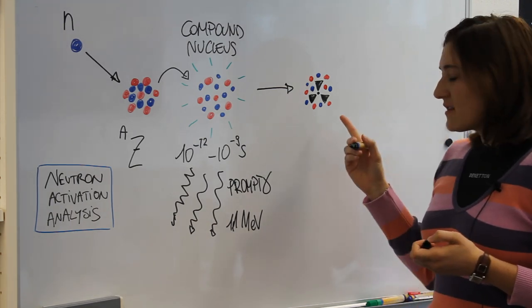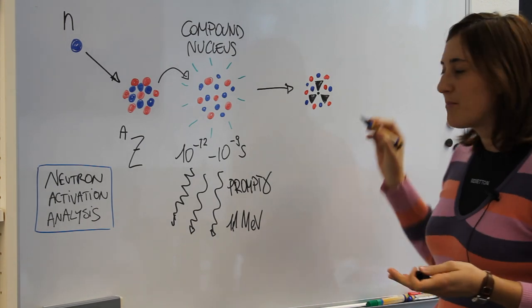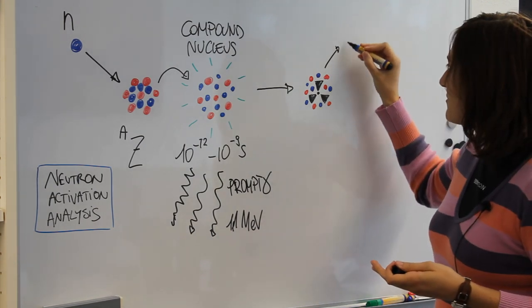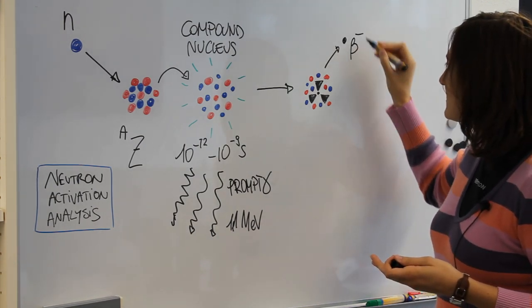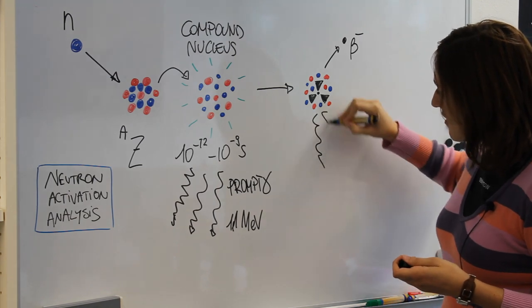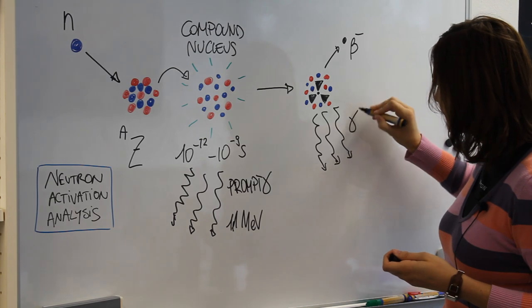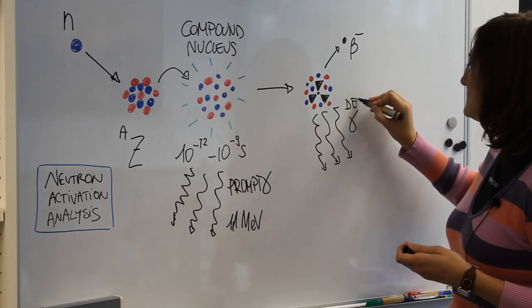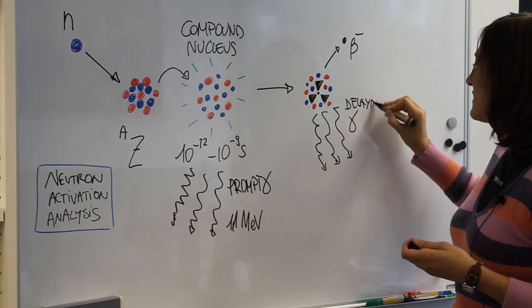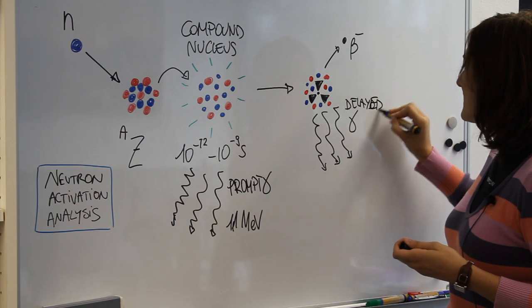Usually the radioactive nucleus decays through the beta minus decay. That means a beta minus particle is emitted and a cascade of gamma rays are afterwards also emitted and it is called delayed gamma radiation.